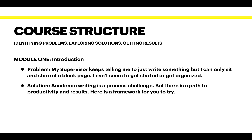Let's talk about the course structure. I believe that courses should achieve three goals: identify the problems, explore the solutions that are possible, and get you results. That's how this course has been developed, which is why you'll see all three things on every page. Module one covers the problem of your supervisor telling you to just start writing, but you can only sit and stare at a blank page. The solution is that academic writing is a process challenge, but there is a path to productivity. Module one provides a framework for you to try.